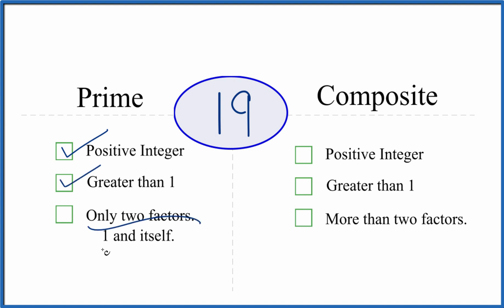And are there only two factors, 1 and 19, that go evenly here into 19? Well, 1 times 19 equals 19. So there's 1, 2 factors. But are there any more? Turns out there aren't any more.